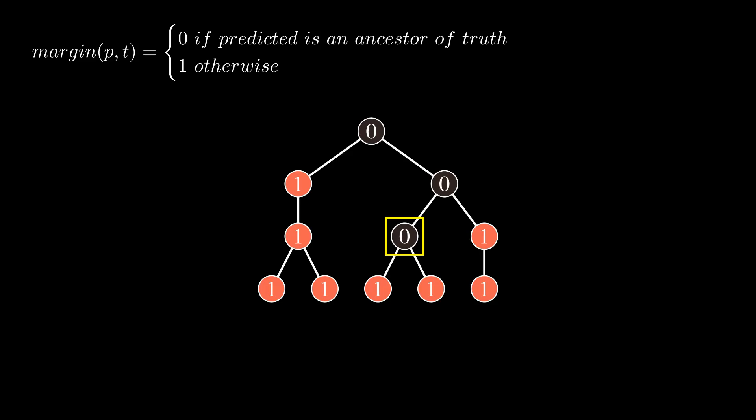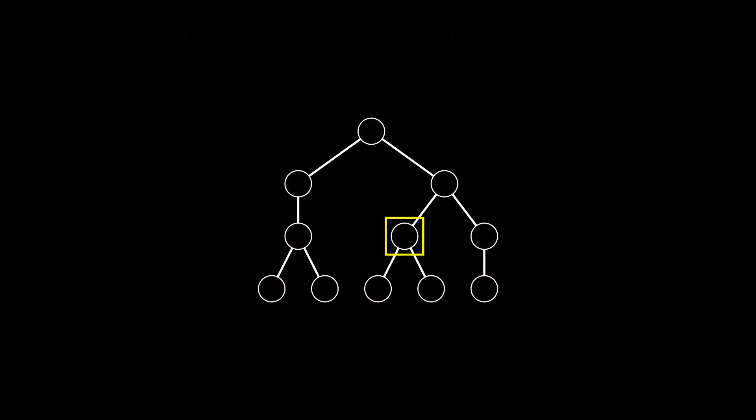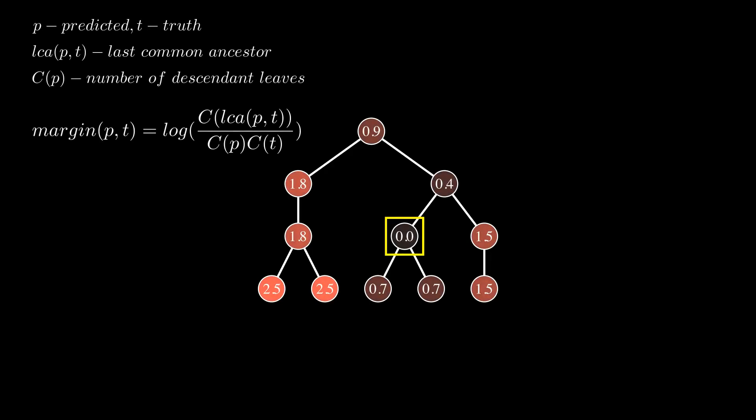In this case, we encourage the network to predict higher likelihoods for the ancestors as well. A cost function can also be more complex, like one that takes into account the number of descendant leaves and the last common ancestor. All in all, this decision will depend on the task you are trying to solve.